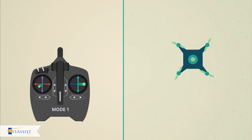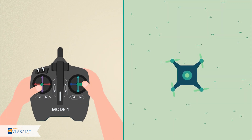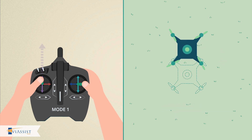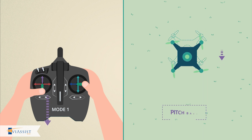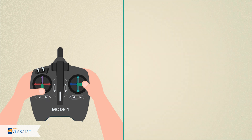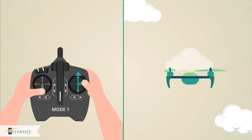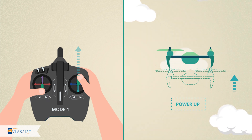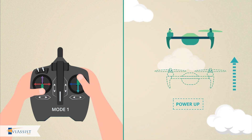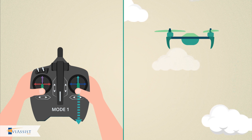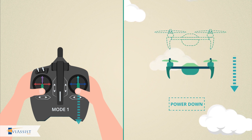In mode 1, moving the left stick forward pitches the aircraft forward. Moving the left stick back pitches the aircraft back. When the right stick is raised, the aircraft will climb. When the right stick is lowered, the aircraft will descend.